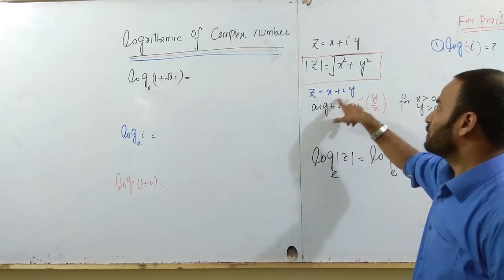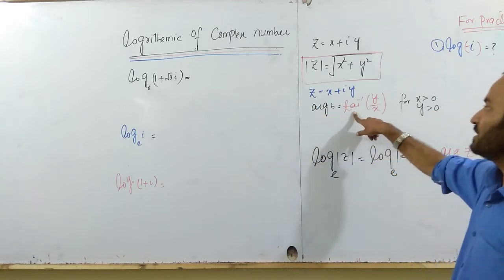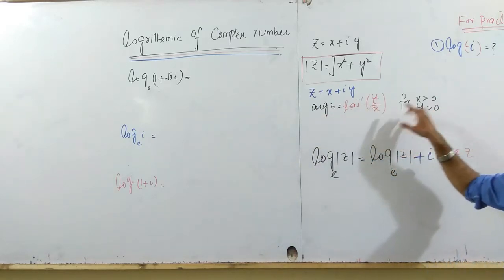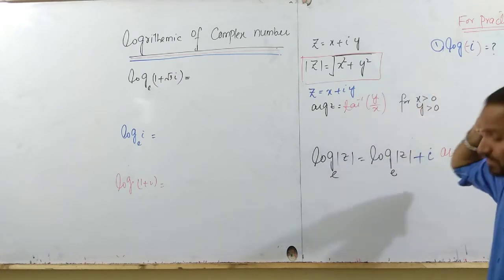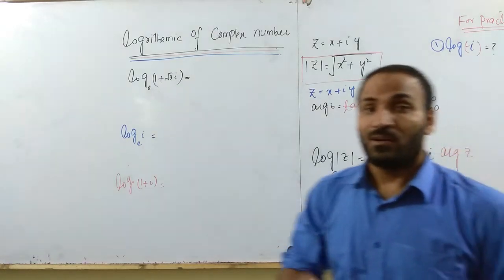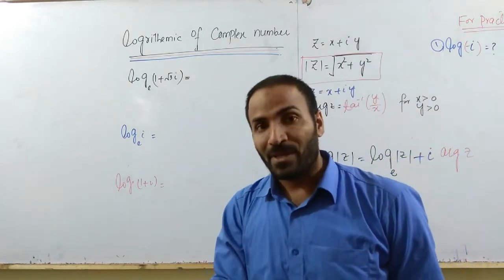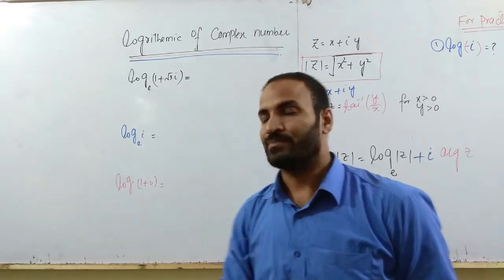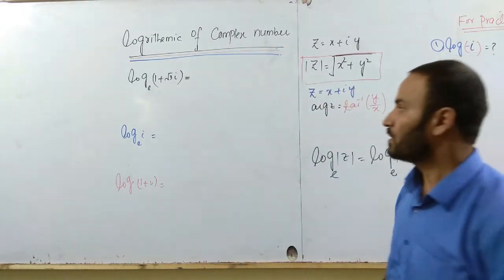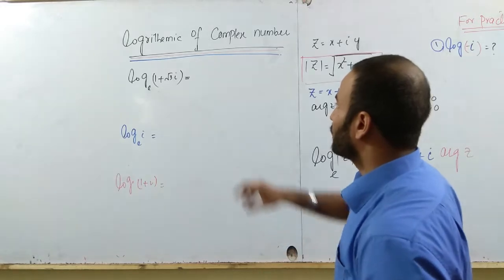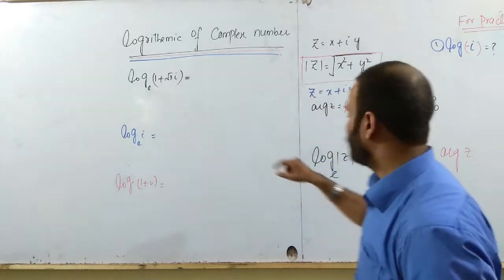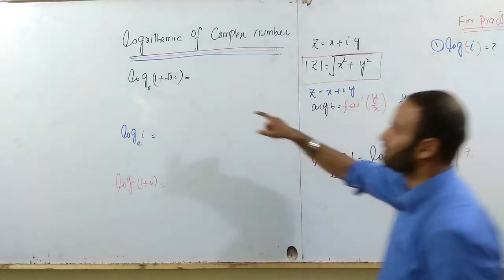z equals x plus iota y, and the argument of z equals tan inverse y over x. I have written here for the first quadrant, but I briefly explained about the argument of amplitude in my previous lecture. You can check on my channel. First of all, we are going to find the magnitude of this complex number.